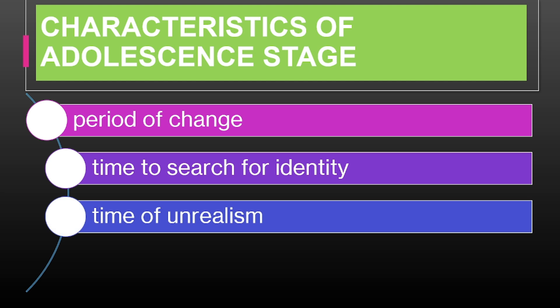Time of Unrealism: adolescents may have idealistic and sometimes unrealistic expectations about the future. A teenager might envision a grand career or lifestyle that may not be entirely feasible but reflects their hopes and aspirations. The idealistic and sometimes unrealistic views held by Romeo and Juliet are emblematic of adolescent thinking. They envision their love as a solution to their problems, despite the real and serious obstacles they face. This idealism leads them to make decisions that are emotionally driven rather than practical.